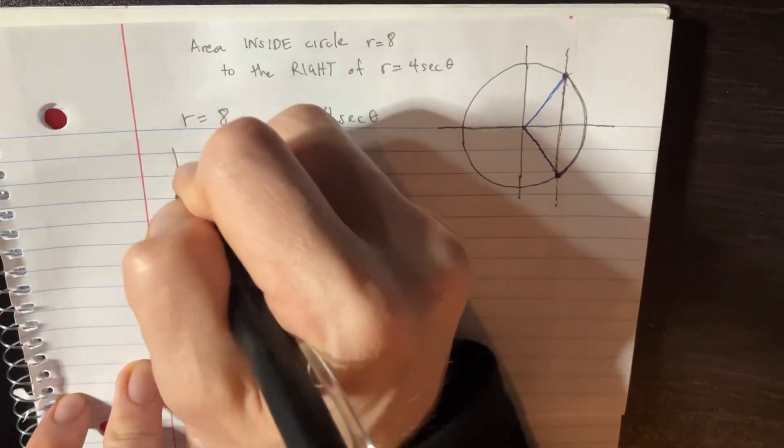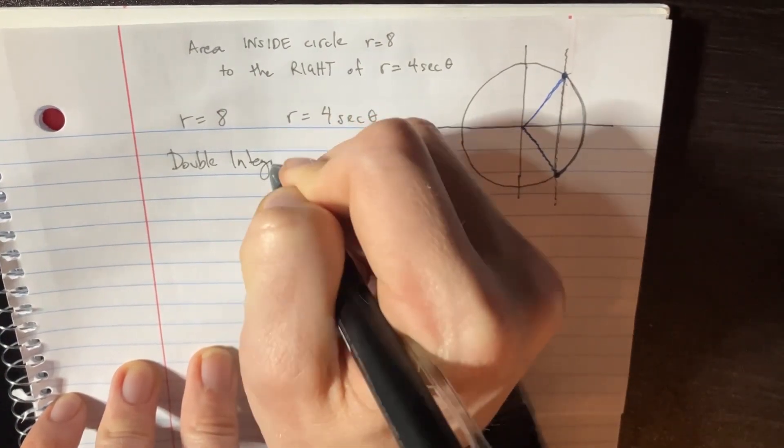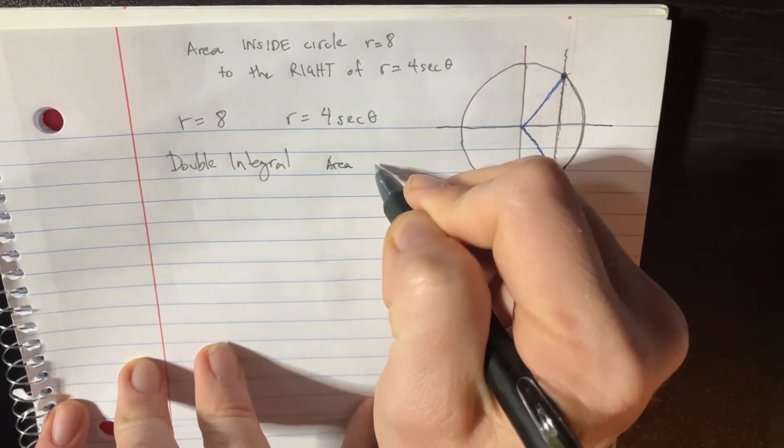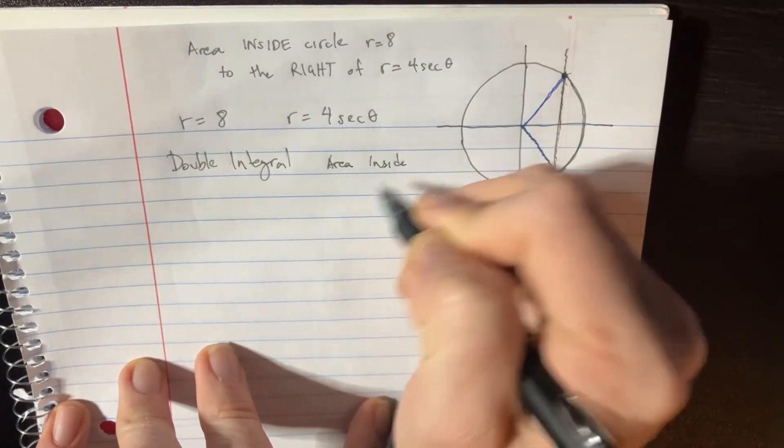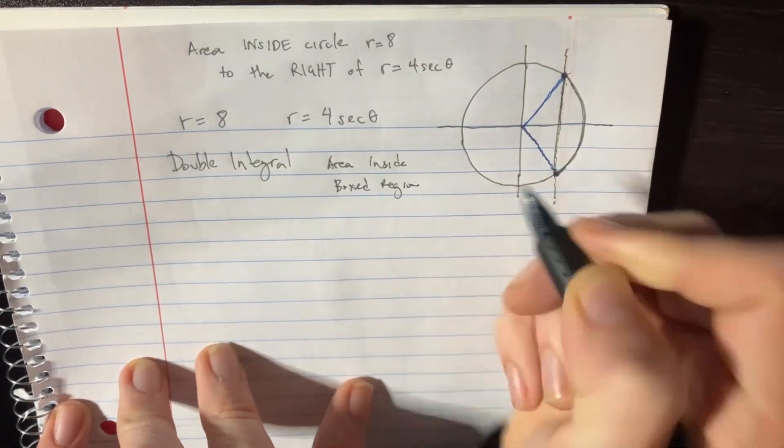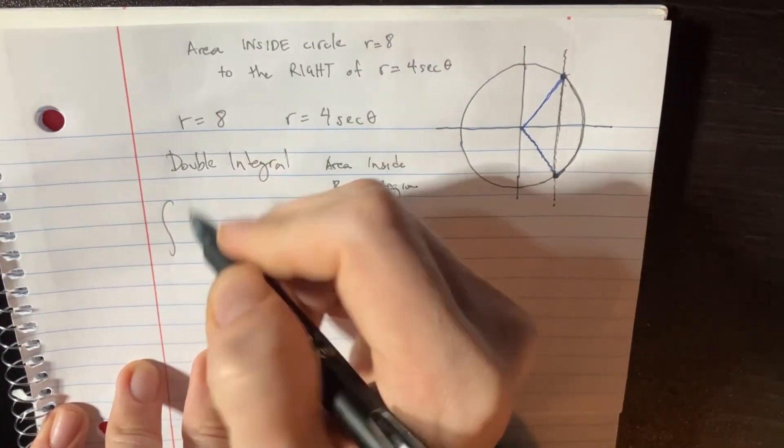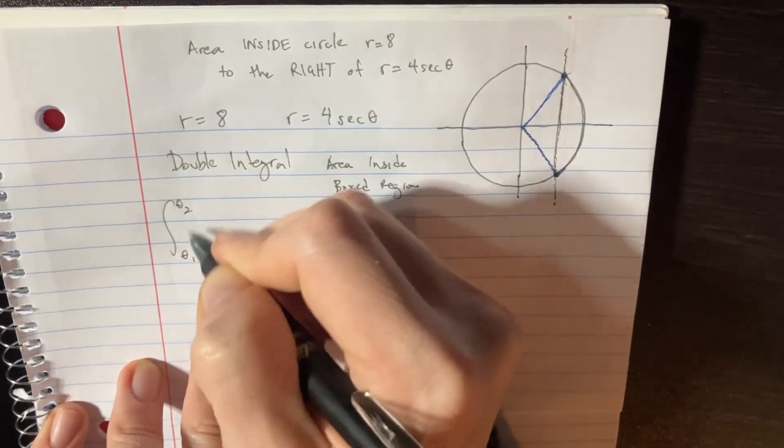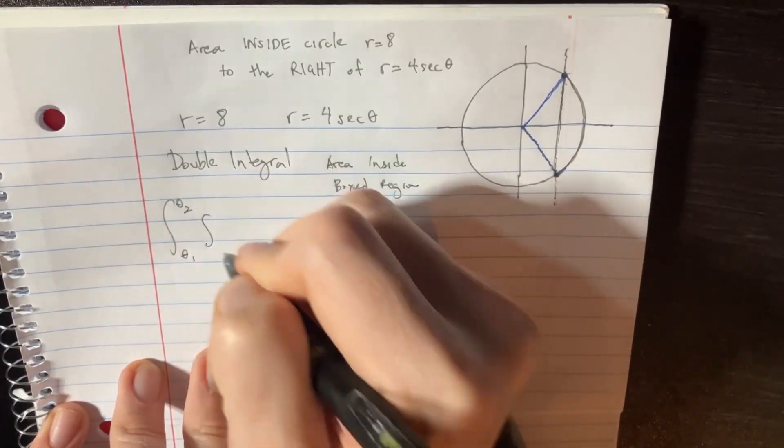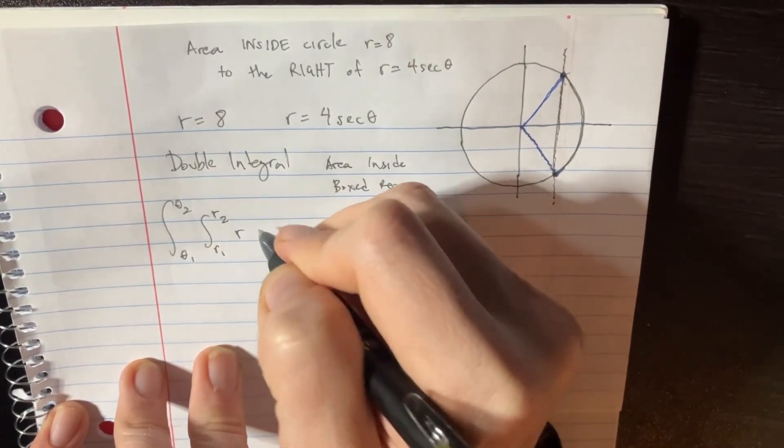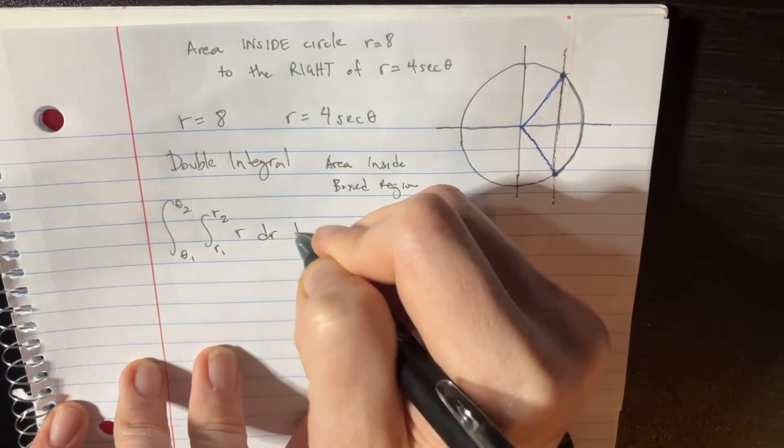Well, I just learned this interesting little thing, it's called a double integral. And this is going to really help us because apparently we can find the area inside a boxed region. We're going to sort of create the limits of our box by doing theta 1 to theta 2 on the first integral and then a smaller integral in here r1 to r2, and then we're just going to go r dr d theta.